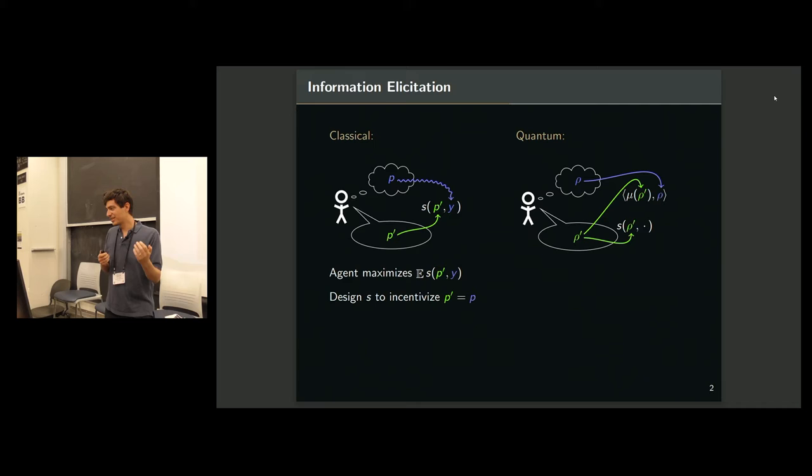There's this mixed state, and from the agent's point of view, they have this idea of what rho is, the true mixed state, and the measurement and the mixed state jointly determine a distribution over outcomes. So the measurement outcome that you see is drawn from this distribution, which is the true distribution, but importantly, it's one degree separated from the actual quantum mixed state.